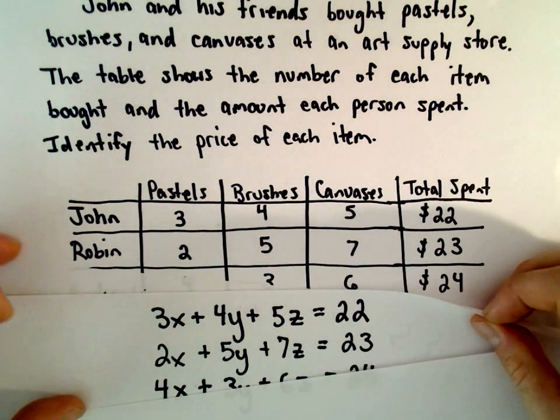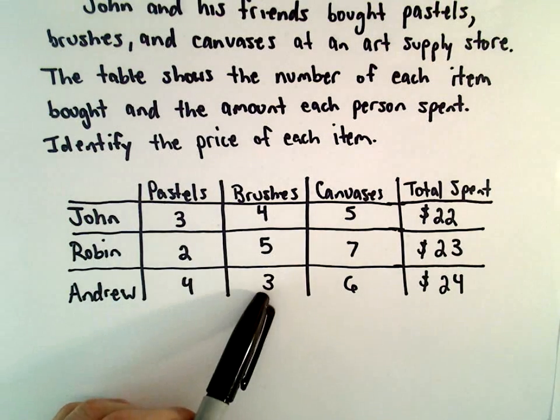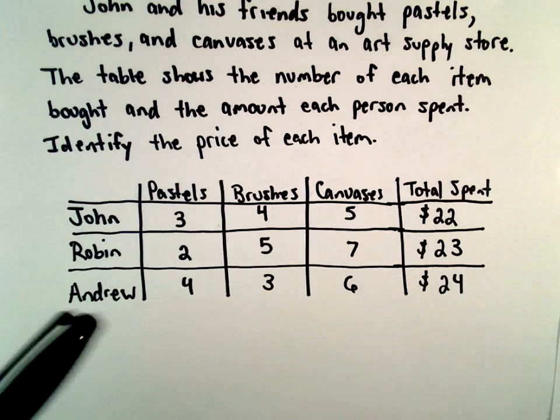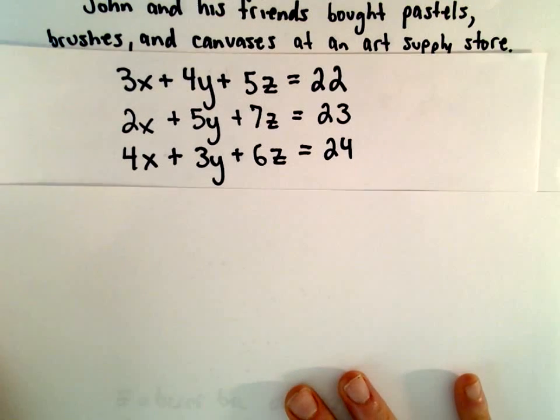And then from our last row, we would have 4X plus 3Y plus 6Z equals 24. So there's our system of equations.